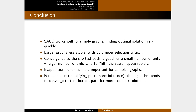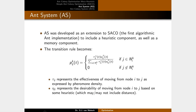SACO works really well for simple graphs and finds the optimal solution quickly. For larger graphs it's less stable, and parameter selection is critical — specifically alpha and the evaporation rate. Convergence to the shortest path is good for a small number of ants; too many ants tend to fill the entire search space. Evaporation becomes more important for complex graphs. For smaller values of alpha the algorithm tends to converge more easily — recall that alpha amplifies or muffles the effect of pheromone influence.